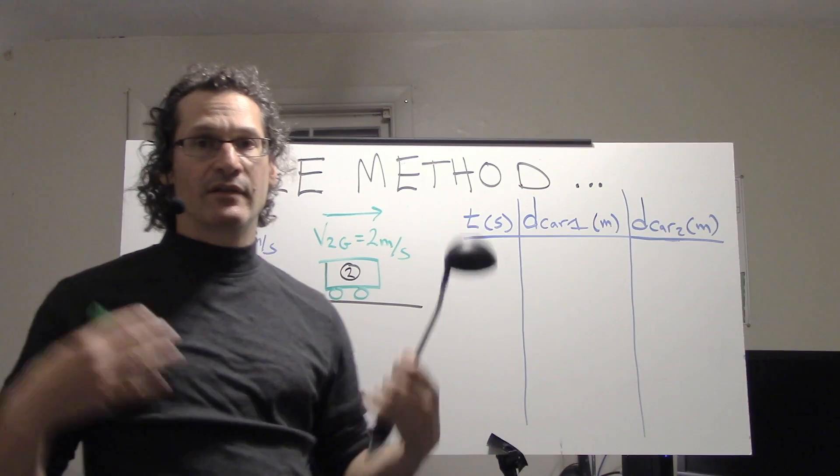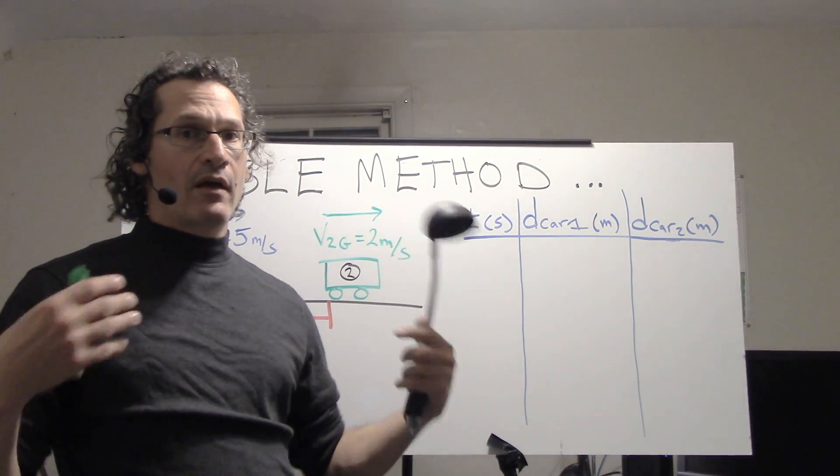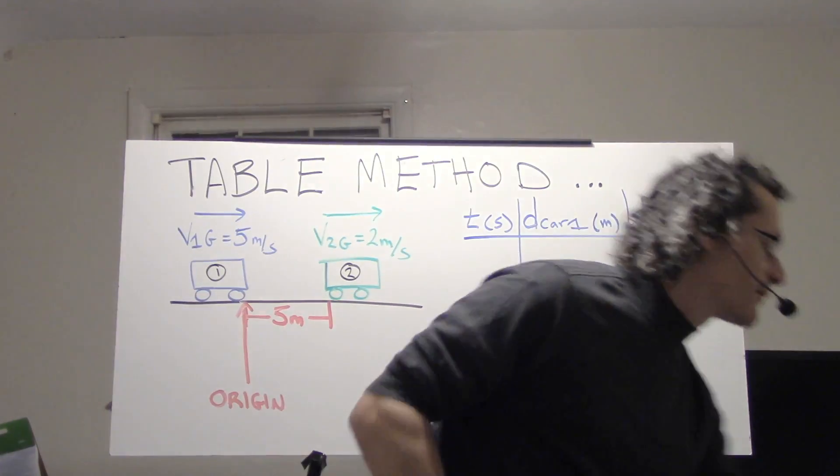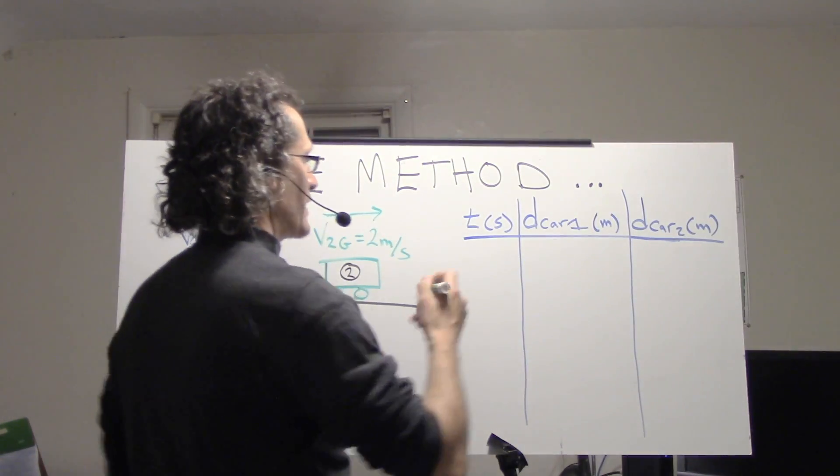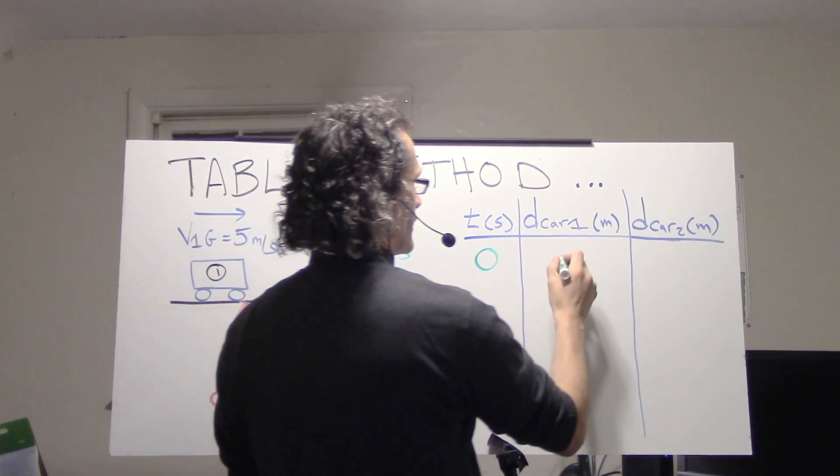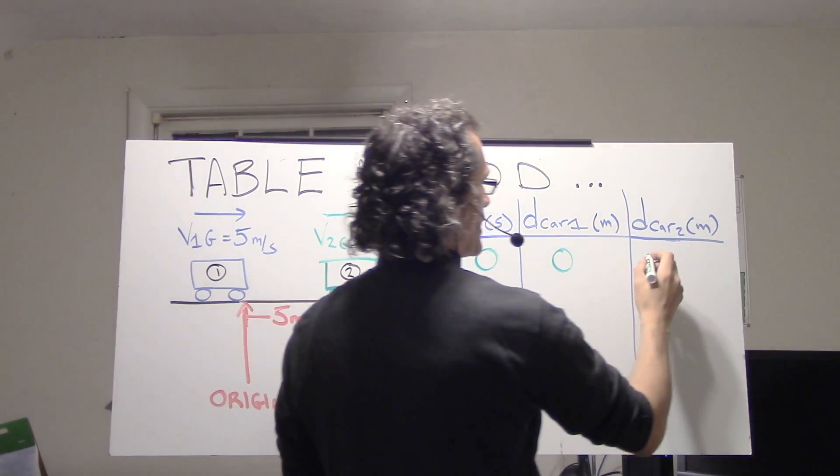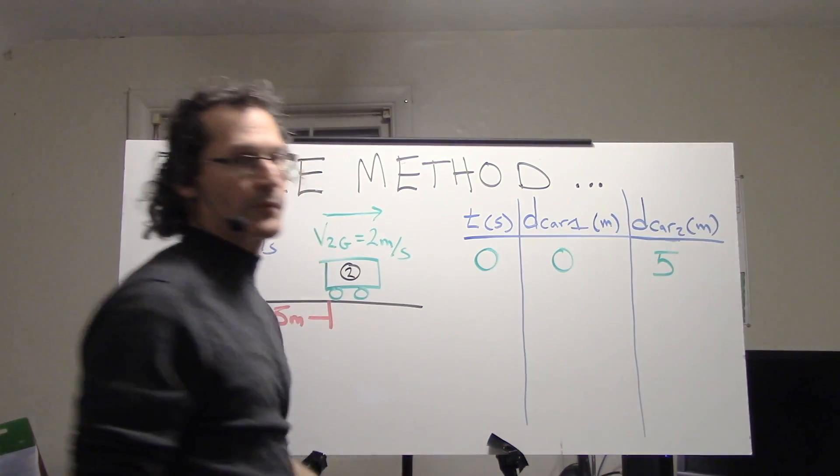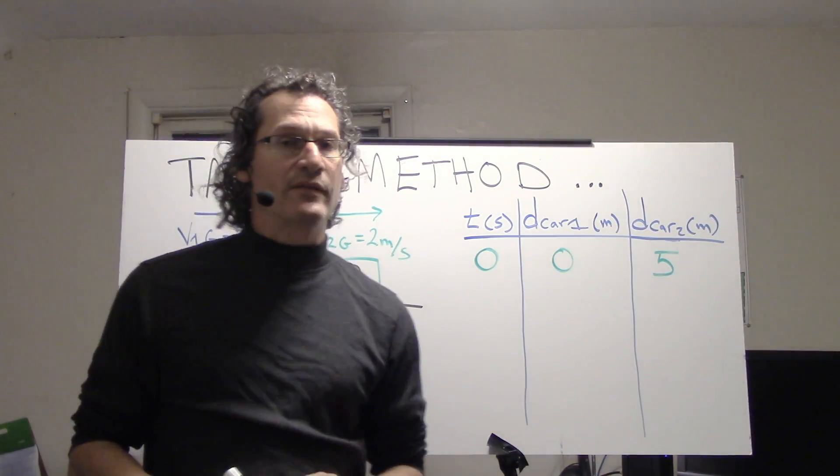At t equals zero, car one is at zero meters, car two is at five meters. So we'll write that down: zero seconds, zero meters for car one, and five meters for car two. In creating the table, we're just going to increase t and see what happens to each of the other values.